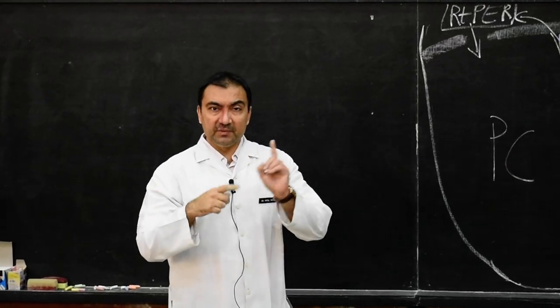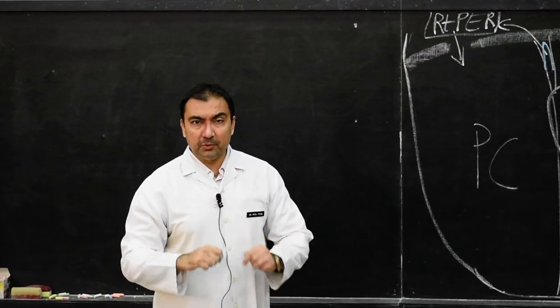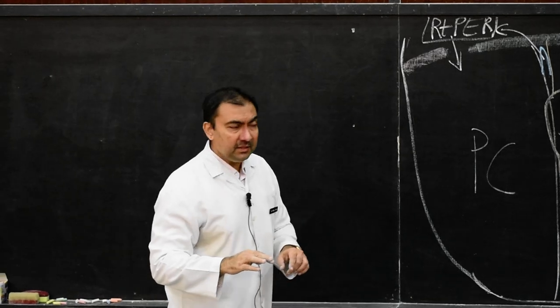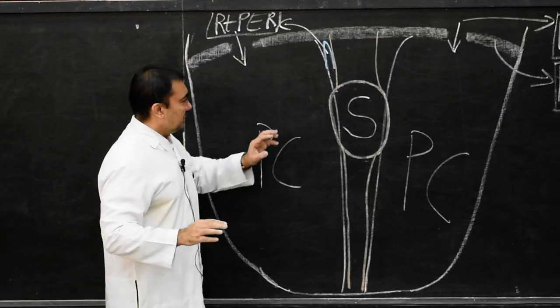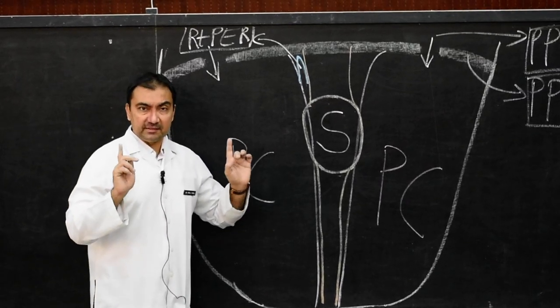Now, step two. This was step one — the development of the right pneumoenteric recess. Step two will be the development of the primitive omental bursa.